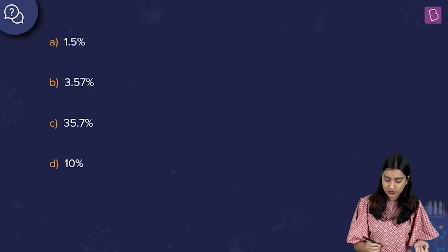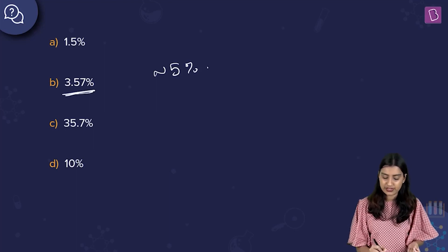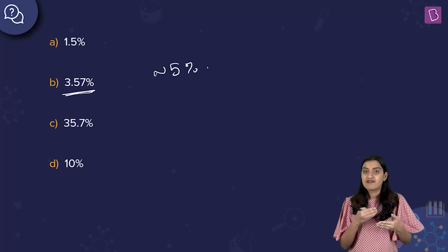What do I have that is close to 5%? I have option B, which is 3.57%. Option A is 1.5, so that is very less.